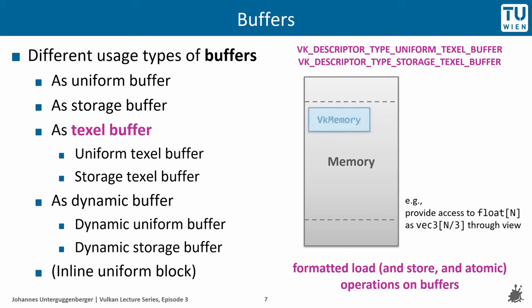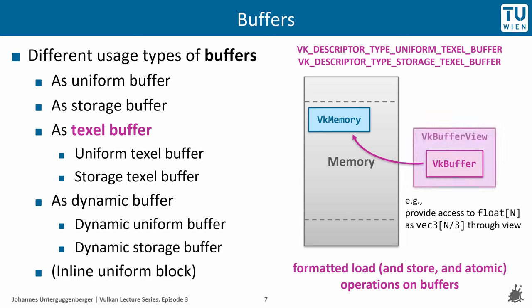Going into more detail: the actual data of a buffer is stored in a VkMemory instance located somewhere in a memory region of the GPU. Different memory regions are indicated by dashed lines within the memory block. Programmers have some control over the memory actually used if there are different types of memory supported by a physical device. We also have to create a VkBuffer handle, which is linked to the VkMemory. A texel buffer adds a VkBufferView to it, which can be seen as a wrapper around VkBuffer providing metadata on how to interpret the VkMemory referenced by the VkBuffer.